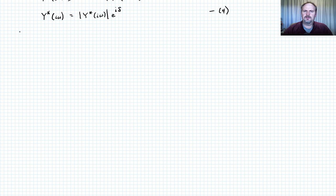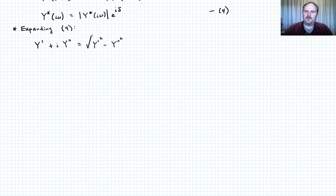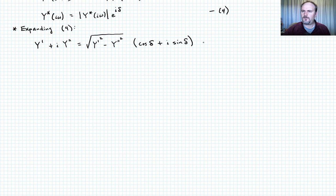Now expanding equation four: on the left hand side we have Y-prime plus i times Y-double-prime. On the right hand side, the magnitude of Y-star is the square root of Y-prime squared minus Y-double-prime squared (since i-squared is negative one). We then use Euler's formula to write e to the i-delta as cosine of delta plus i times sine of delta. Let's call that equation five.